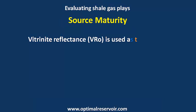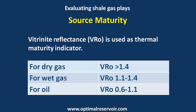For source maturity, vitrinite reflectance is used as a thermal maturity indicator. For dry gas, it should be larger than 1.4%. For wet gas, between 1.1 and 1.4%. For oil, between 0.6 and 1.1%.